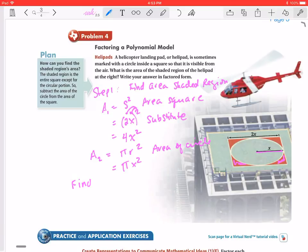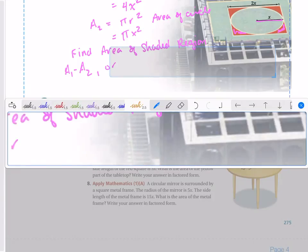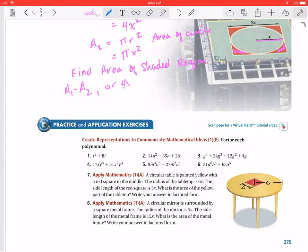So to find the area of the shaded region, we will take A1 minus A2. Or we can say 4X squared minus pi X squared.